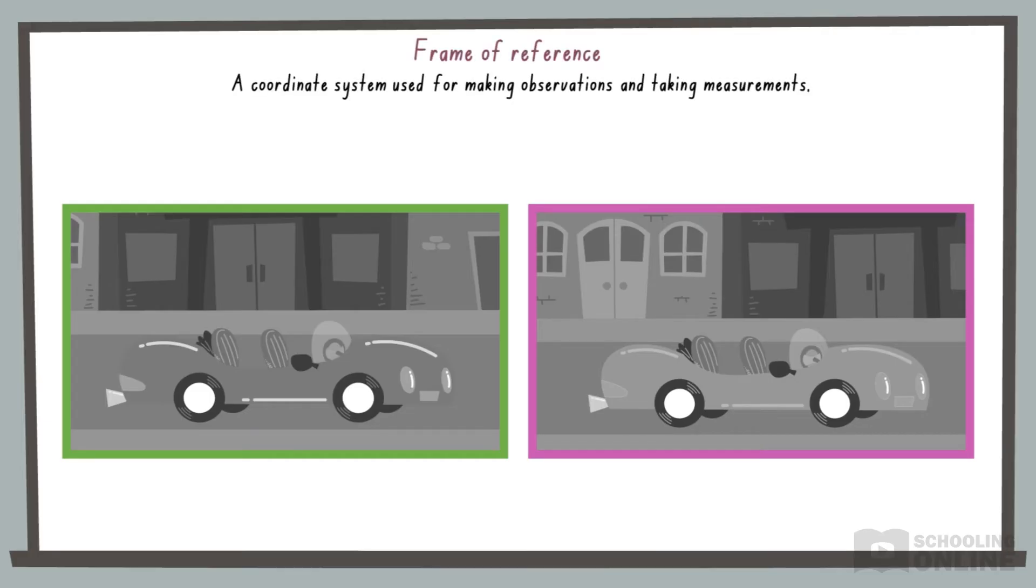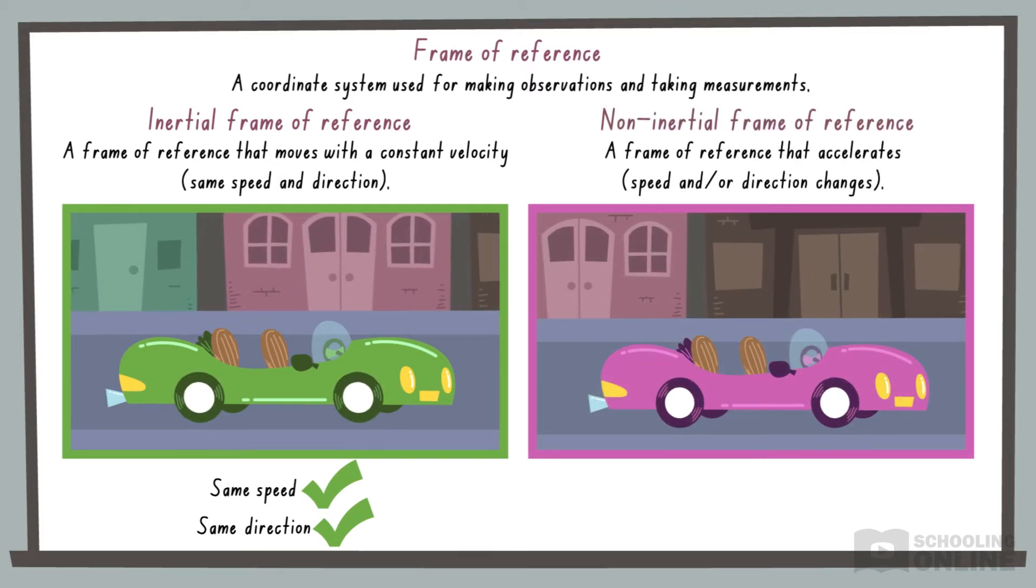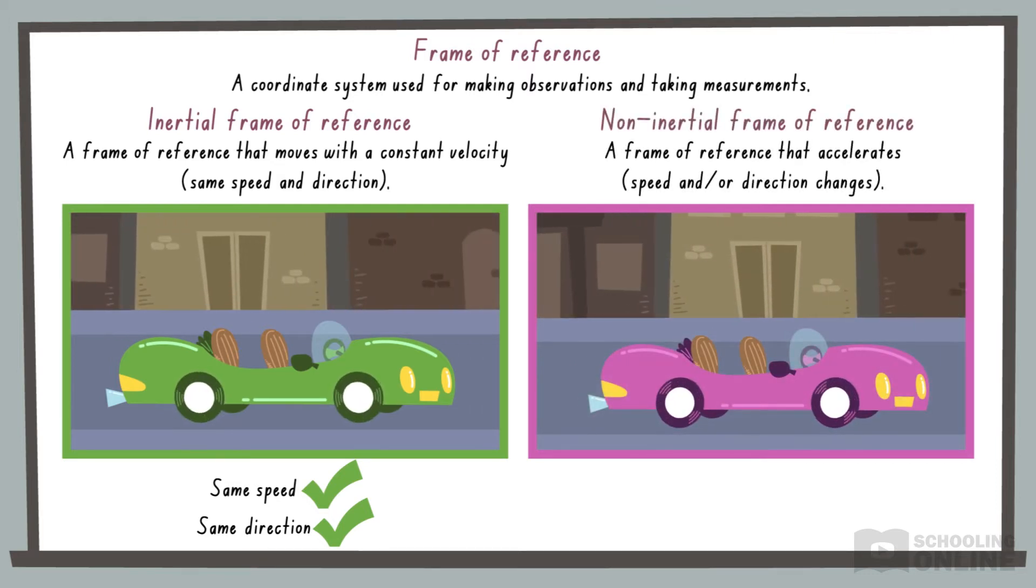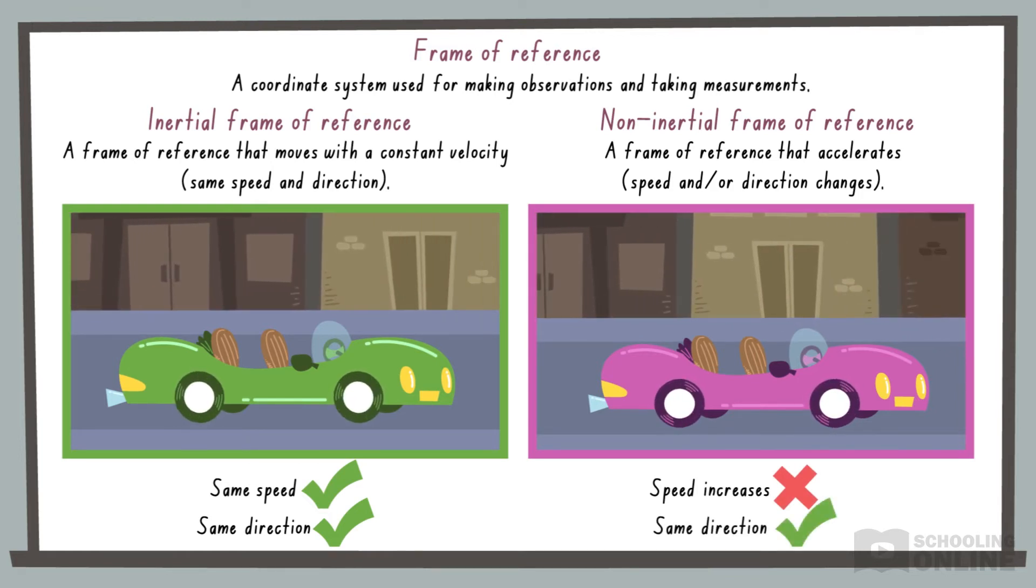A frame of reference is a coordinate system that is used for making observations and taking measurements. An inertial frame of reference moves with a constant speed and direction. In comparison, a non-inertial frame of reference accelerates, meaning that its speed and or direction changes.